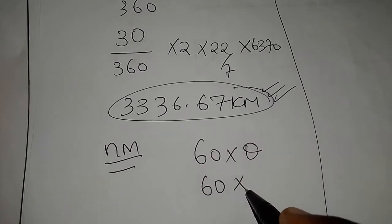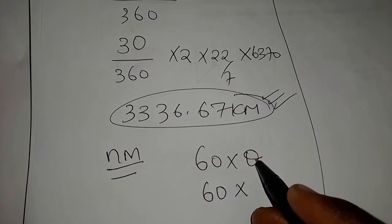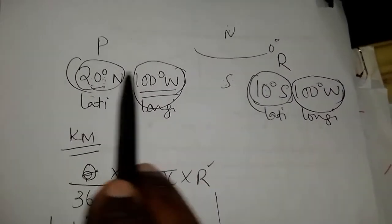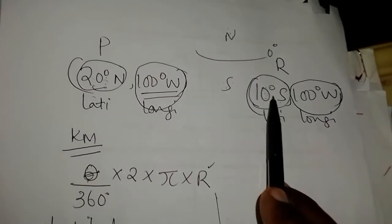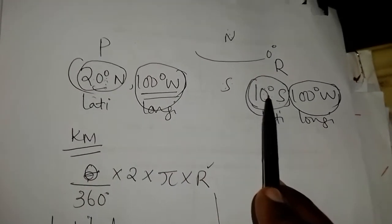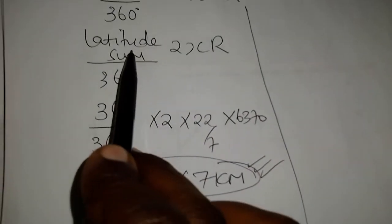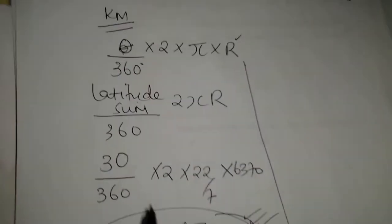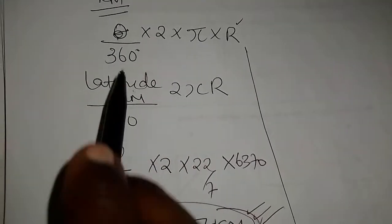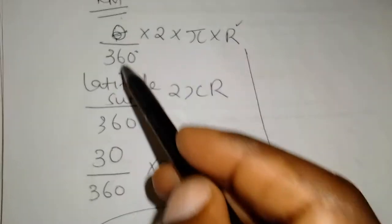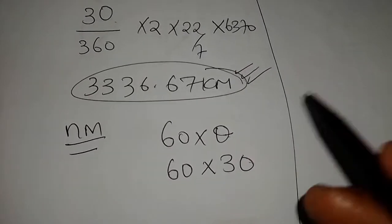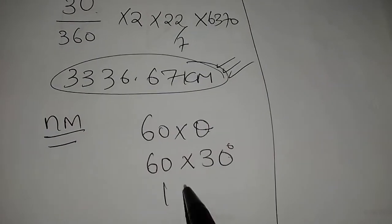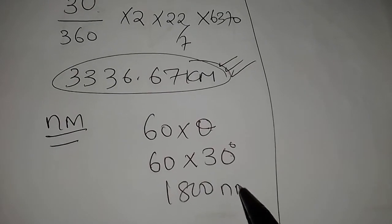What does that give me? I'll say 60 times theta, the latitude sum. Why? Because they are in different hemispheres. 20, 10. So we add latitude sum. Theta is 30 degrees, so 60 times 30. Because our theta here is 30. So what do you get? 1800 nautical miles.